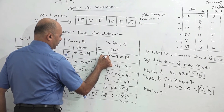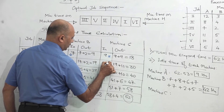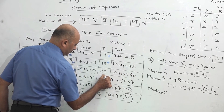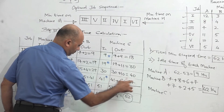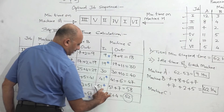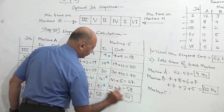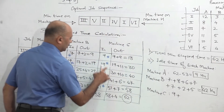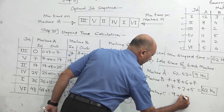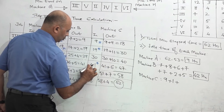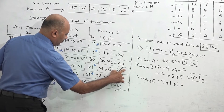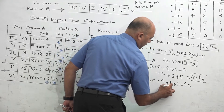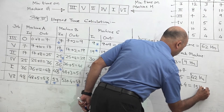Machine C is idle for the first 9 hours. Then from 18 to 19 = 1 hour idle. Then from 40 to 41 = 1 hour idle. Then from 47 to 51 = 4 hours idle. Total idle time for machine C: 9 + 1 + 1 + 4 = 15 hours.